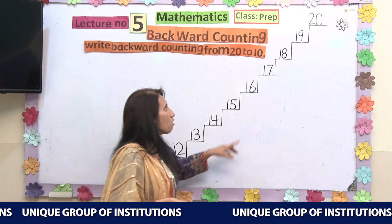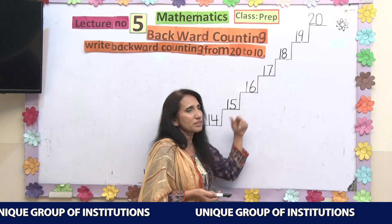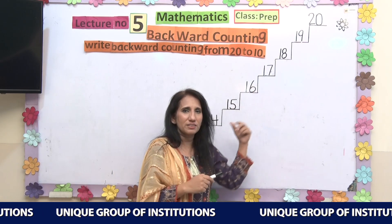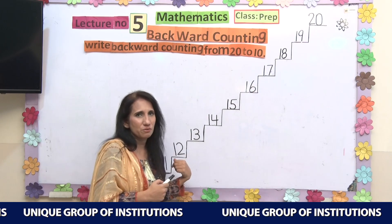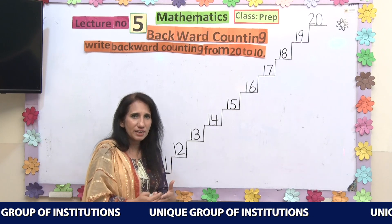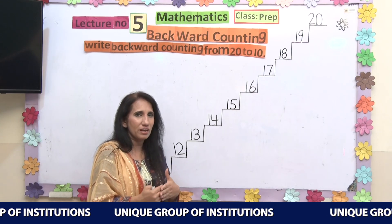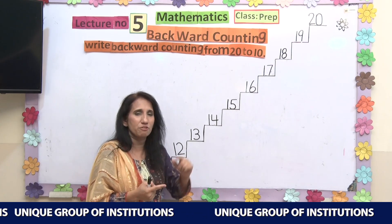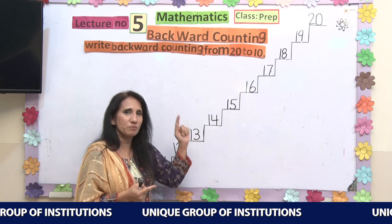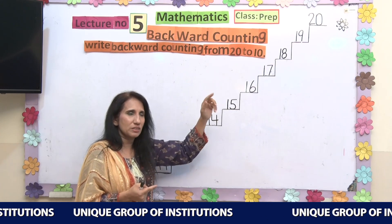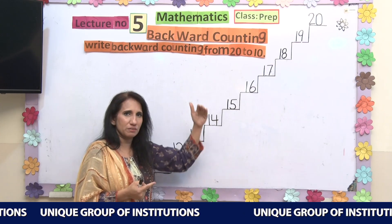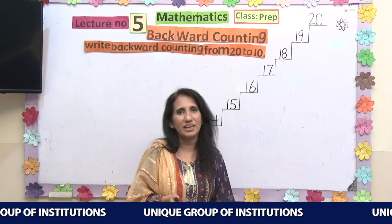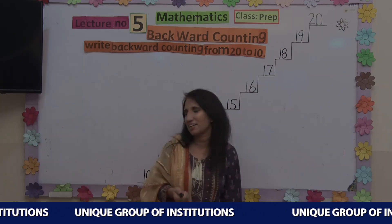So this is your backward counting. From 20 till 10, and earlier 10 till 0. Hope you have understood it very well. You know that we will not start from 0 — we will start from 10 or 20 and come down. We'll meet again inshallah. Till then, Allah Hafiz. Take care.